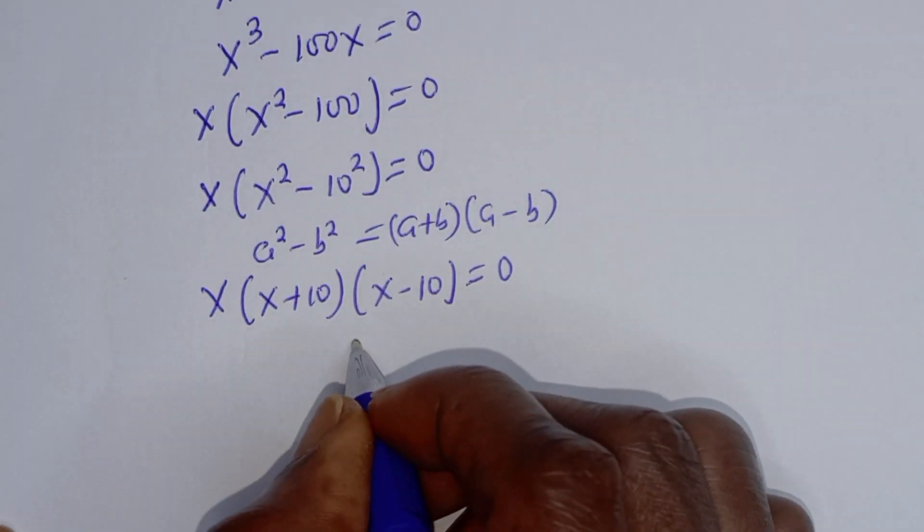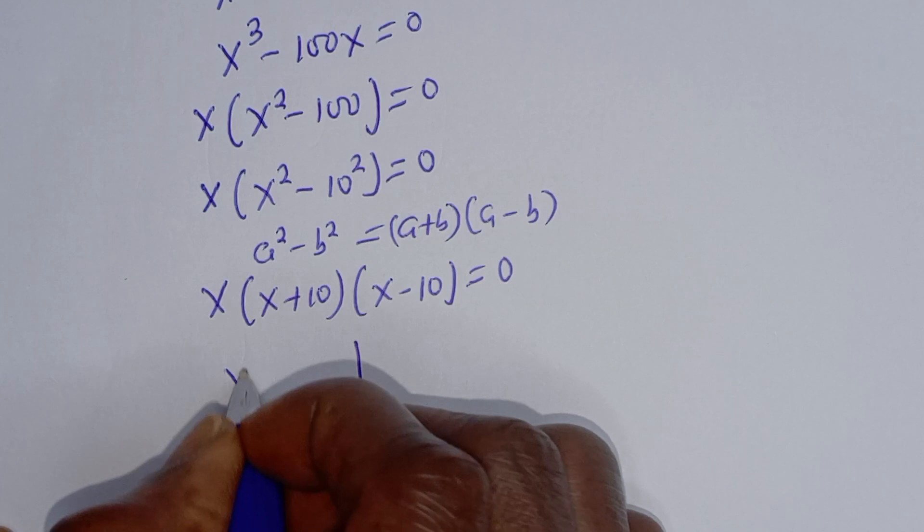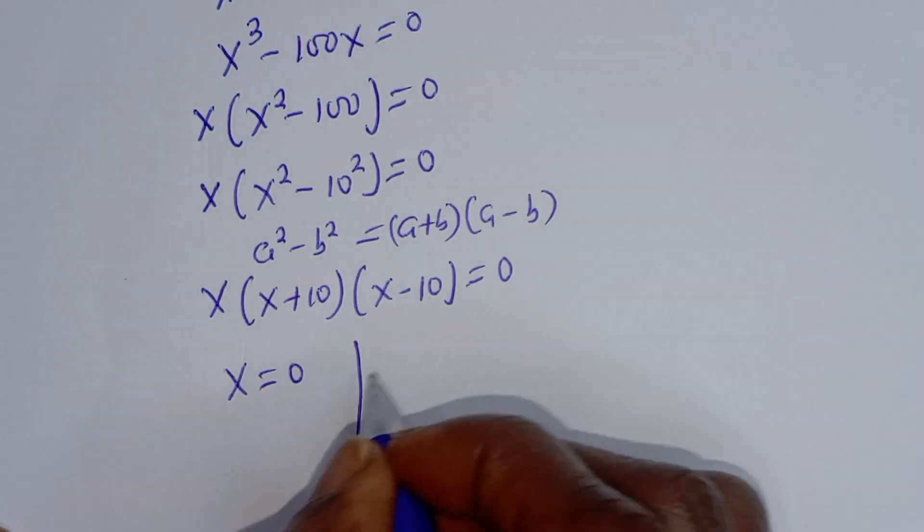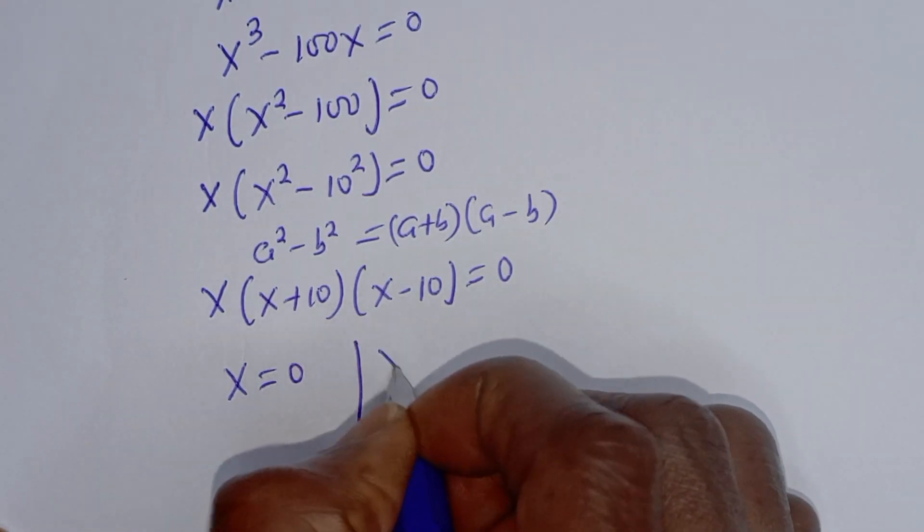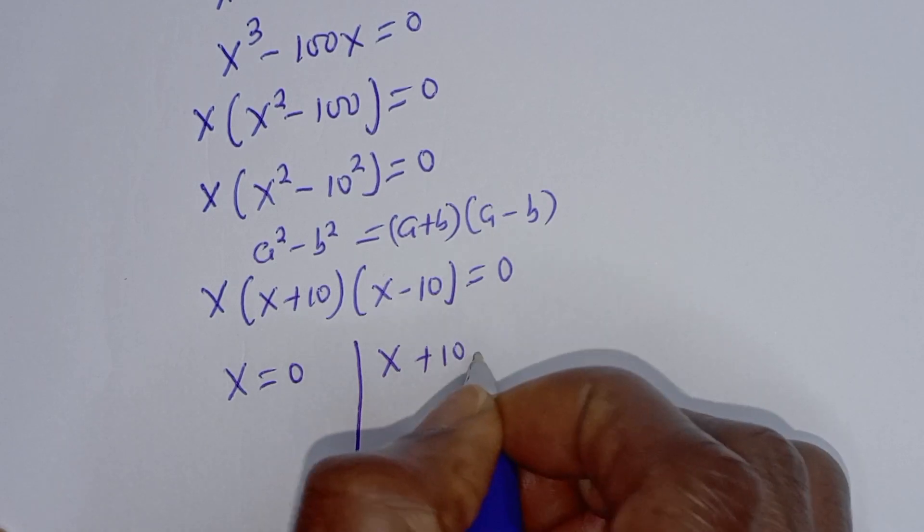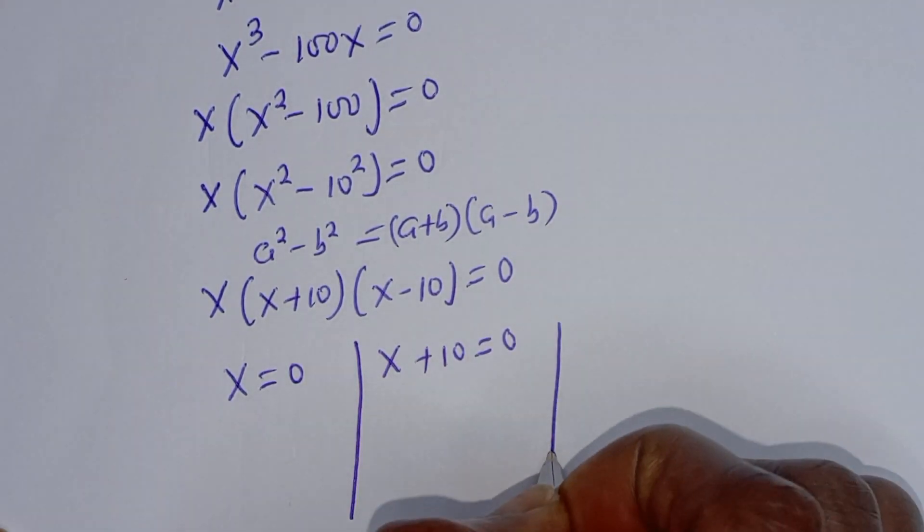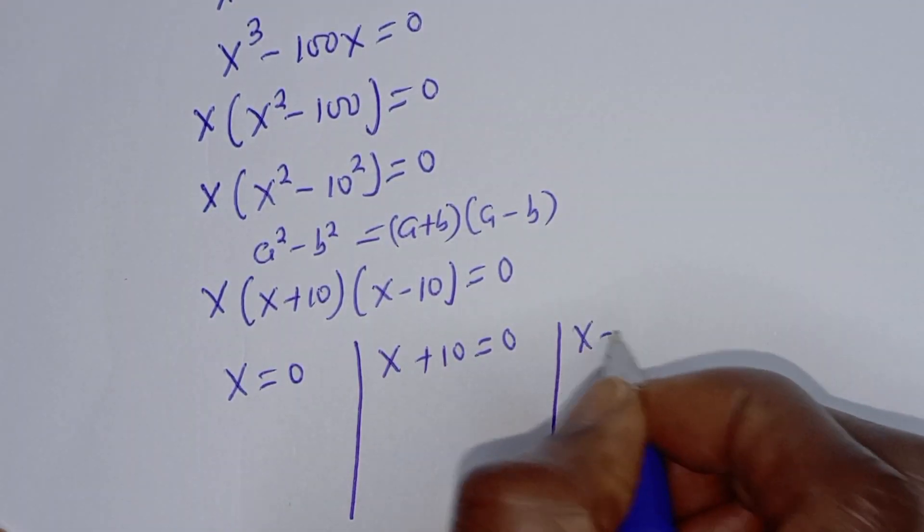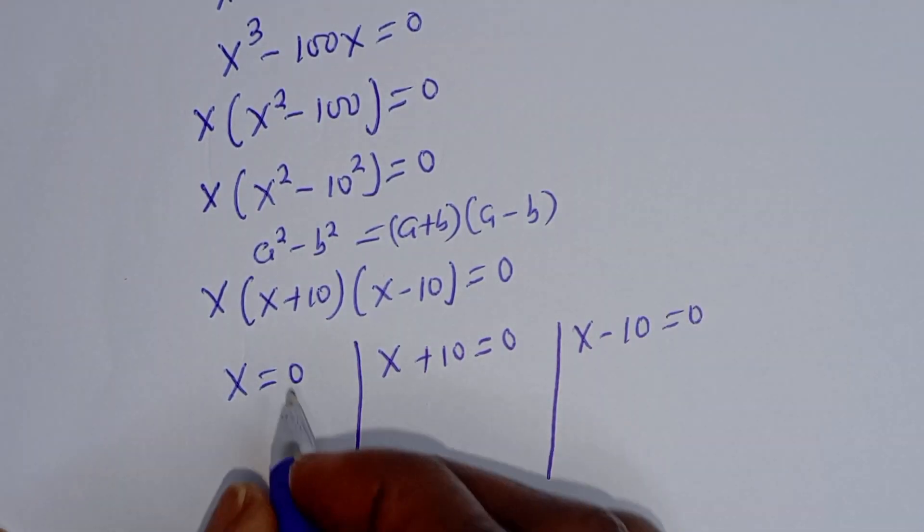Here there are three cases. The first case is x is equal to 0. Then the second case is x plus 10 is equal to 0, and the third case is x minus 10 is equal to 0.